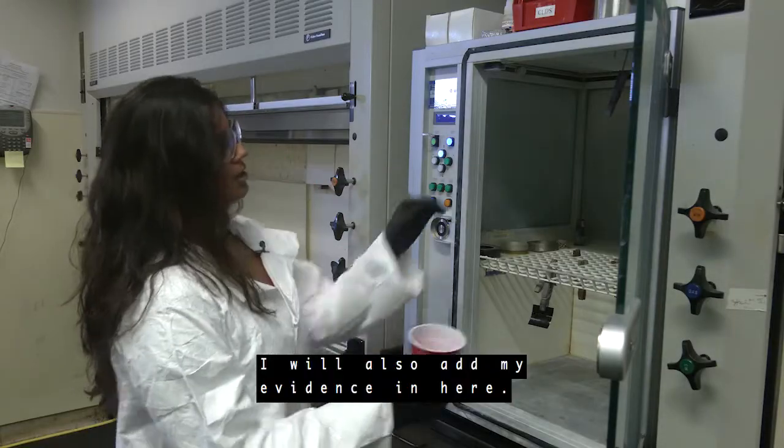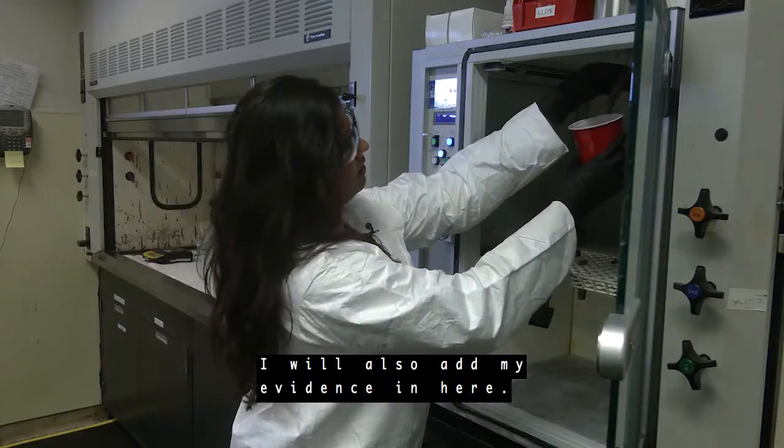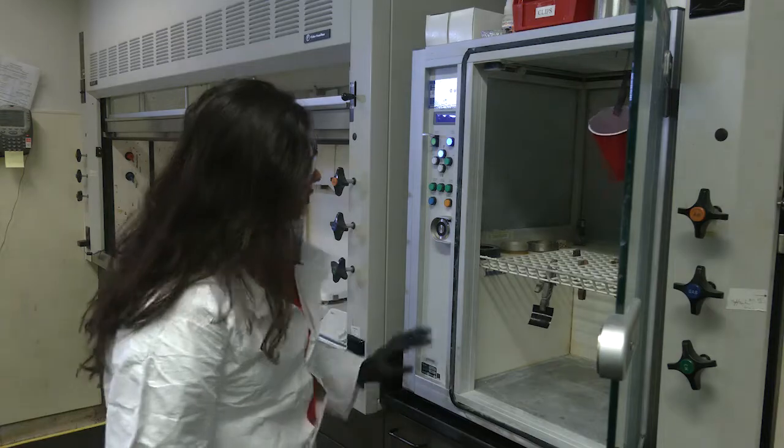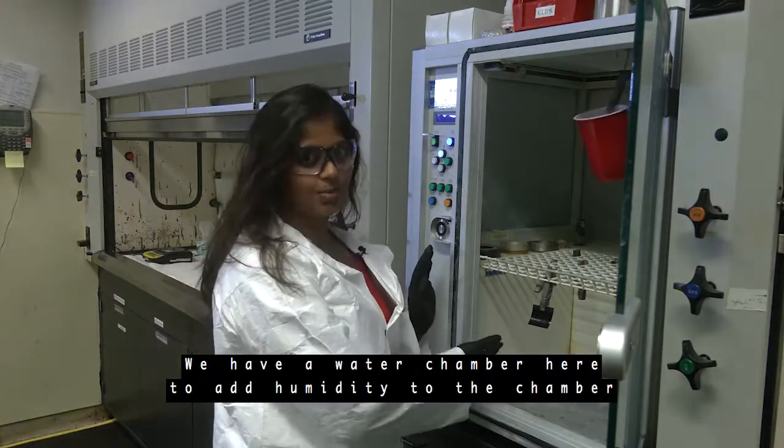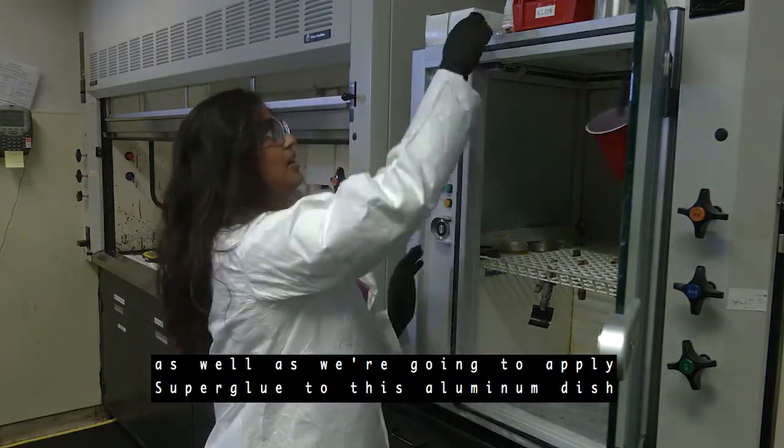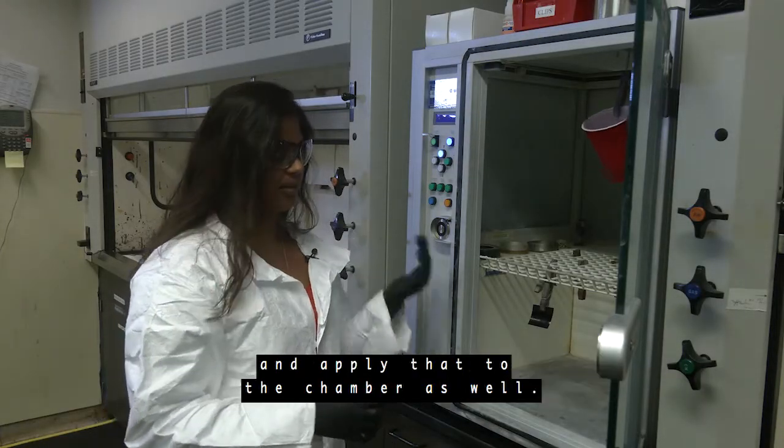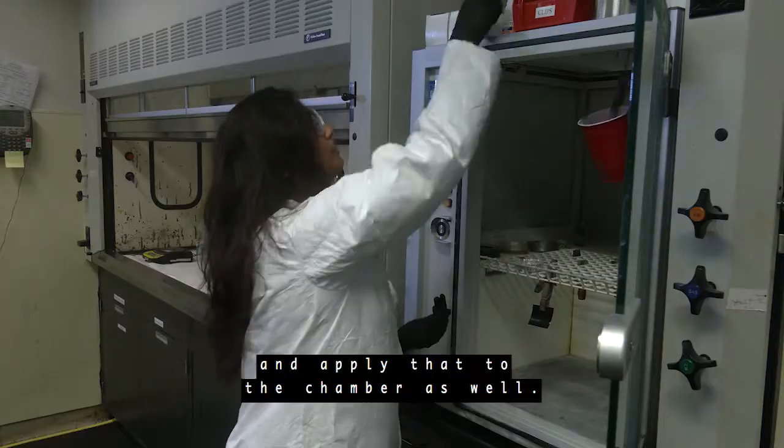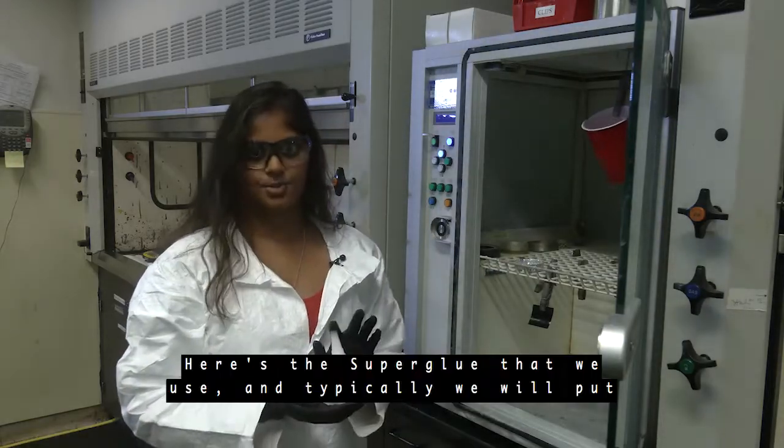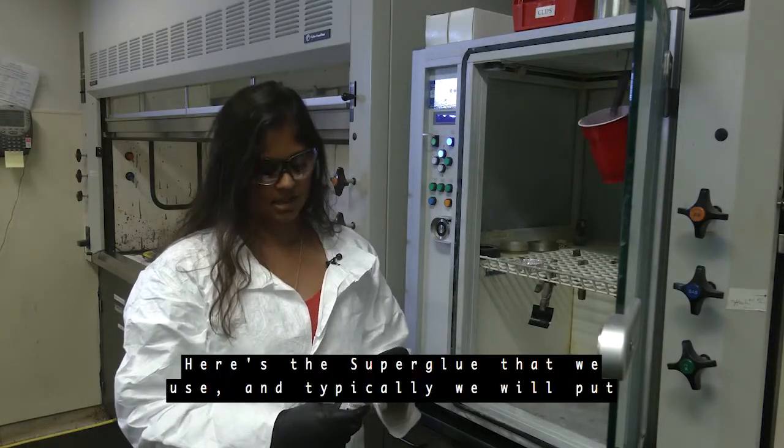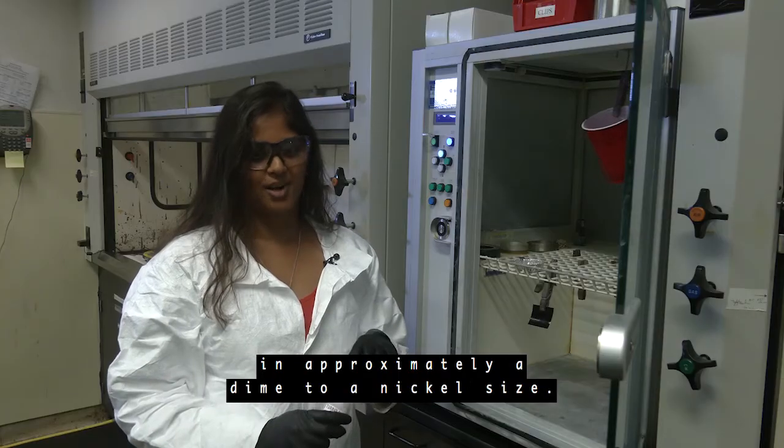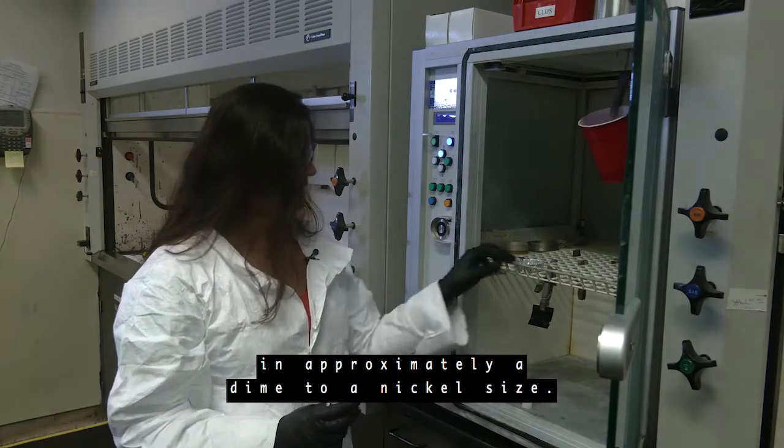I will also add my evidence in here. We have a water chamber here to add humidity to the chamber as well as we're going to apply superglue to this aluminum dish and apply that to the chamber as well. Here's the superglue that we use and typically we will put in approximately a dime to a nickel size.